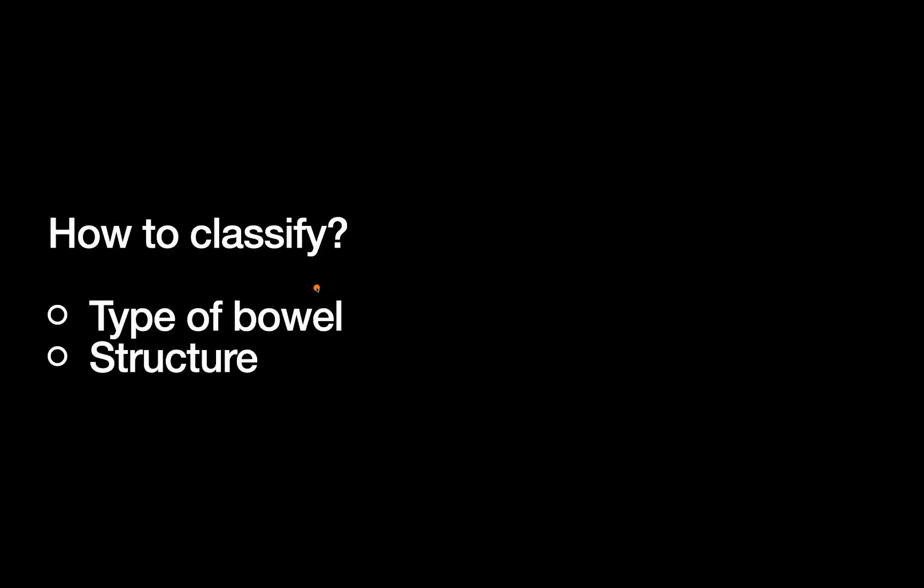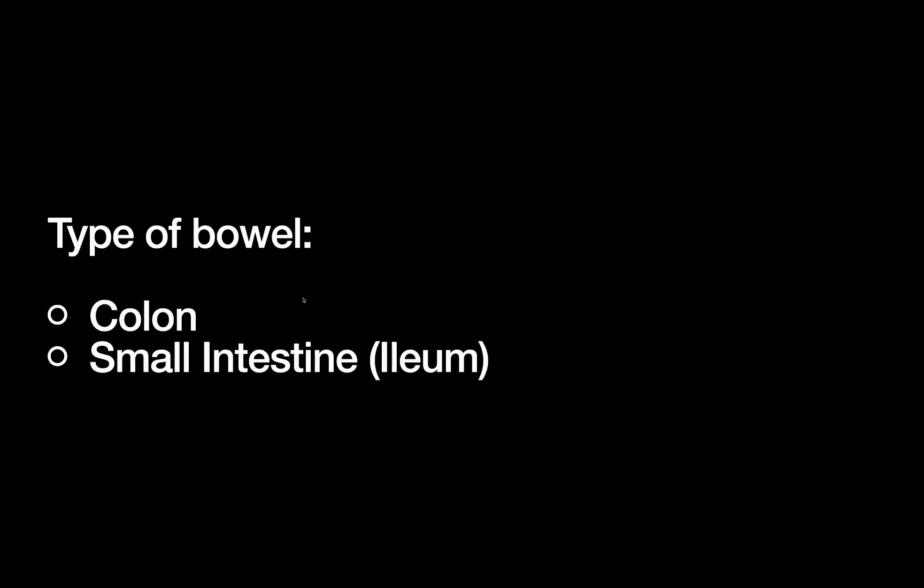There are two main variables that you can classify ostomies within. You can either classify by the type of bowel used to create the ostomy or the actual mechanical structure of the ostomy itself. Usually you describe an ostomy using both of these, and once you have these two variables, you know exactly what you're dealing with. The two primary types of ostomies involve the colon, which would be called a colostomy, or the distal small intestine involving the ileum, which would be called an ileostomy.